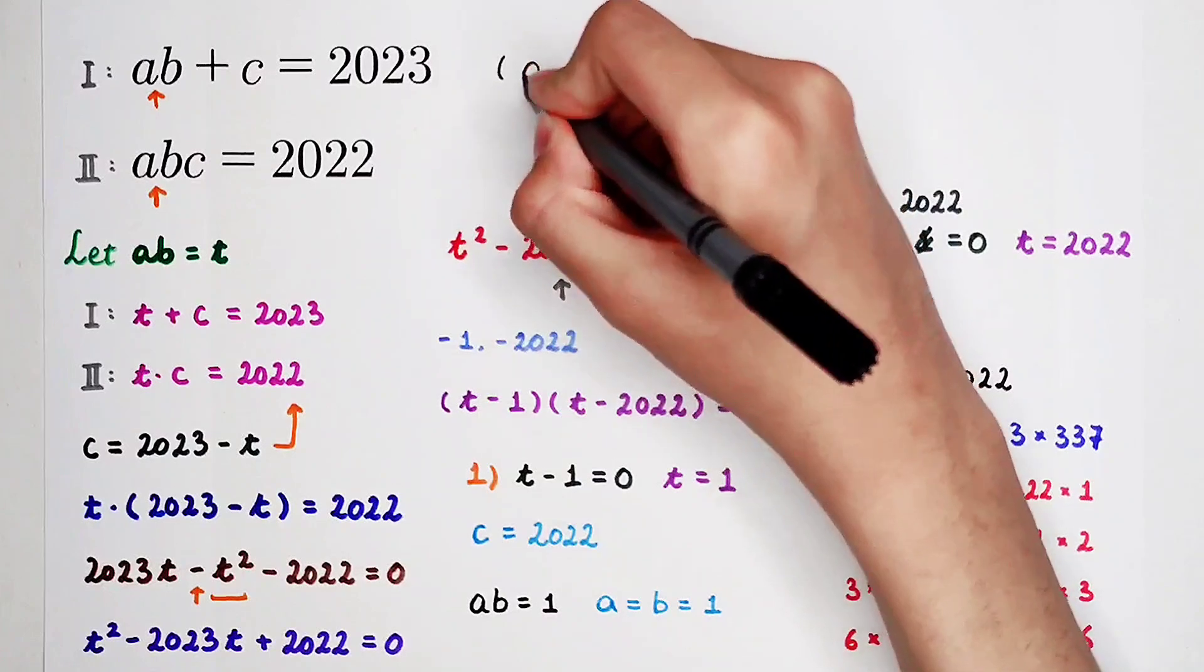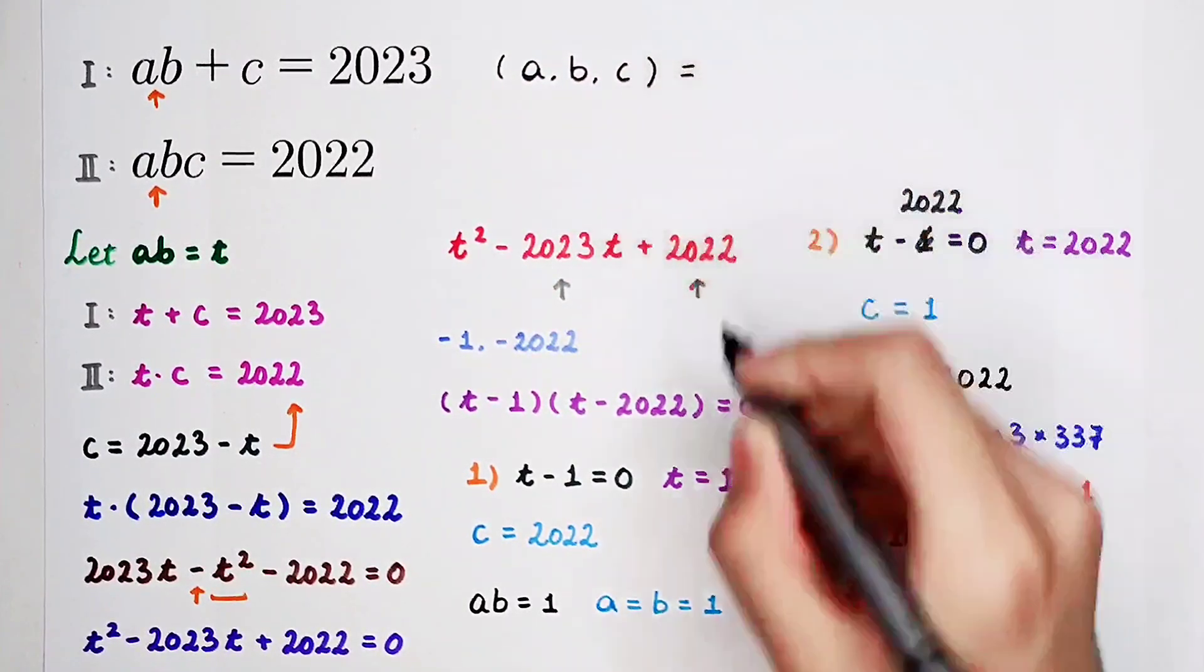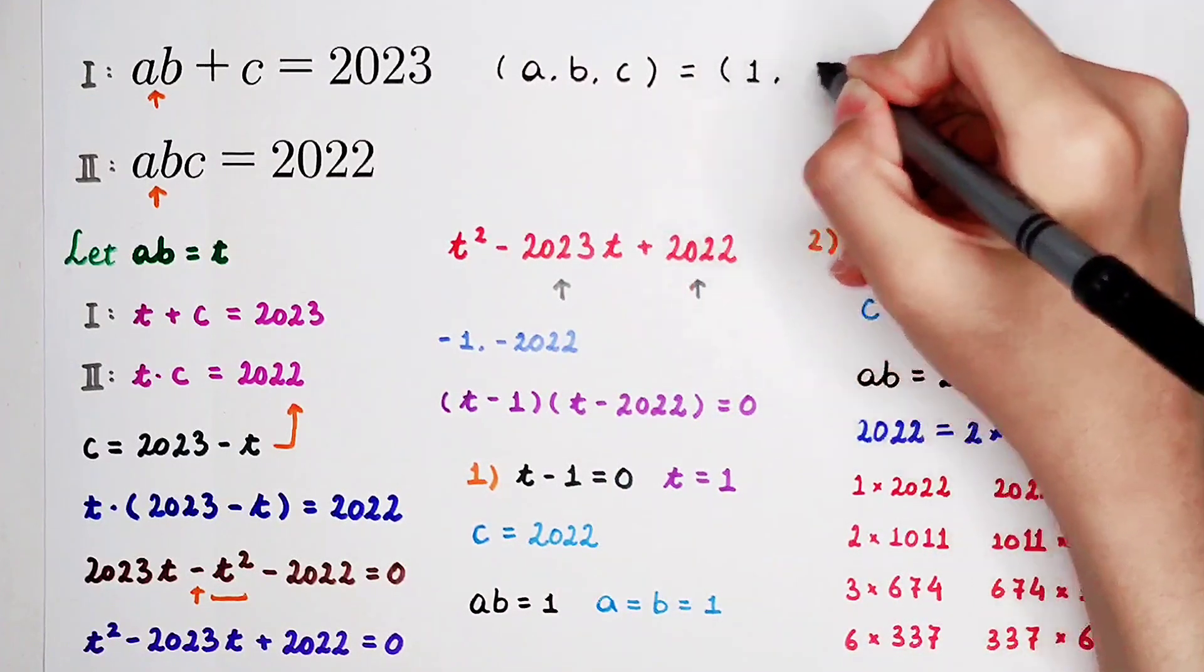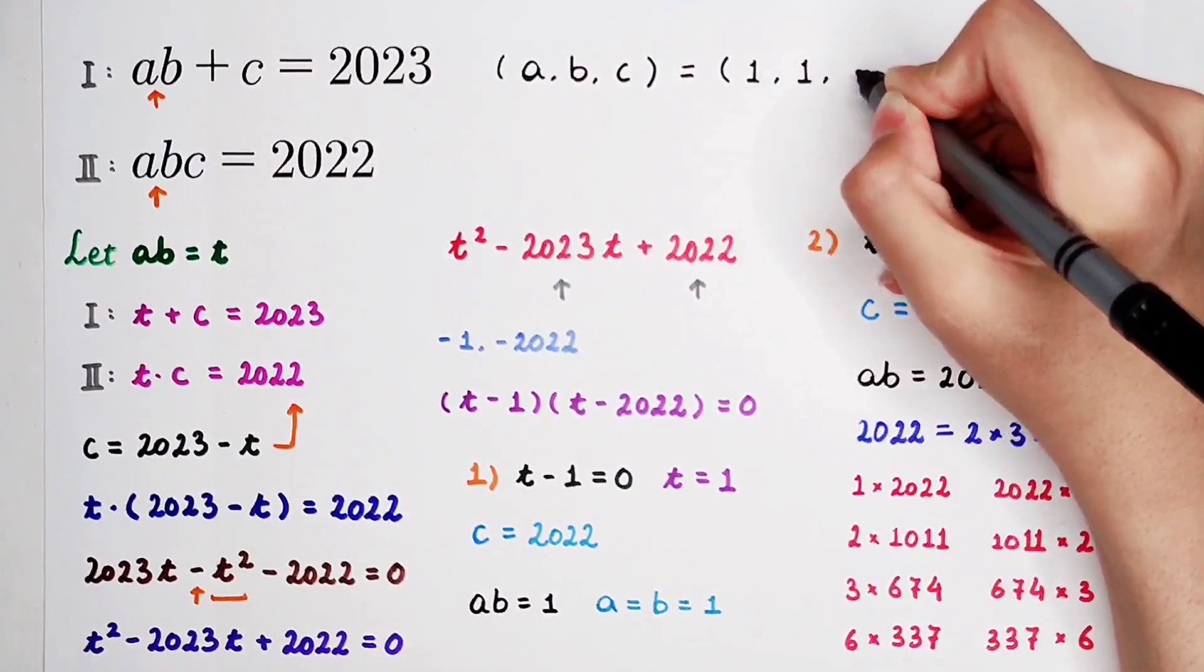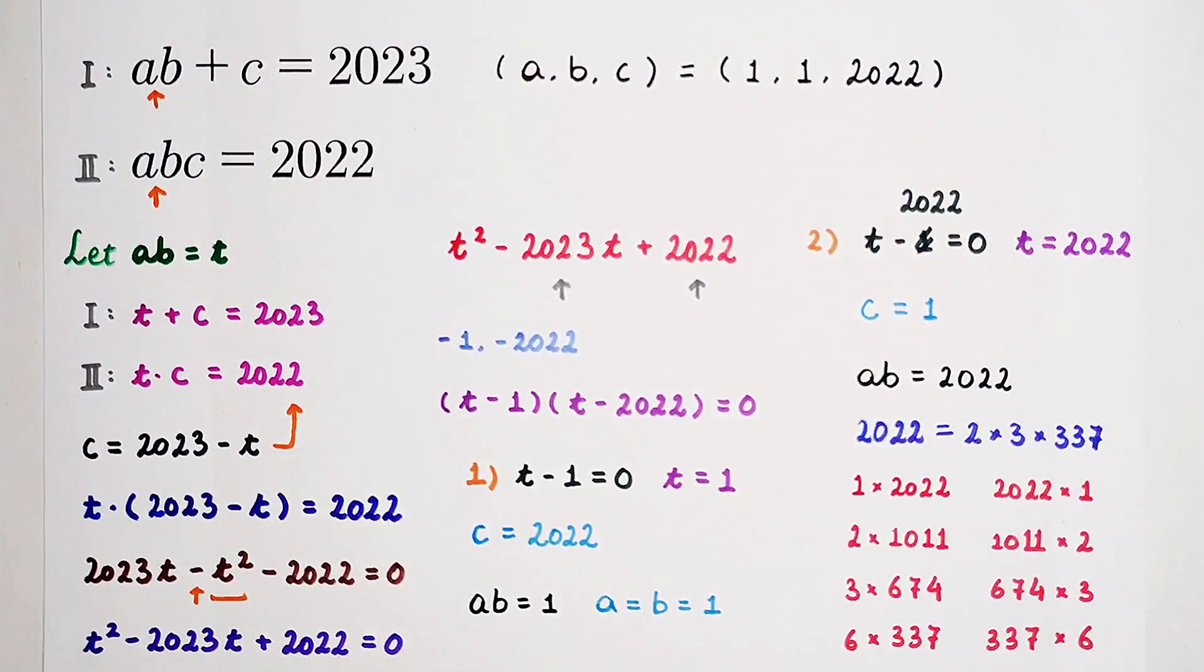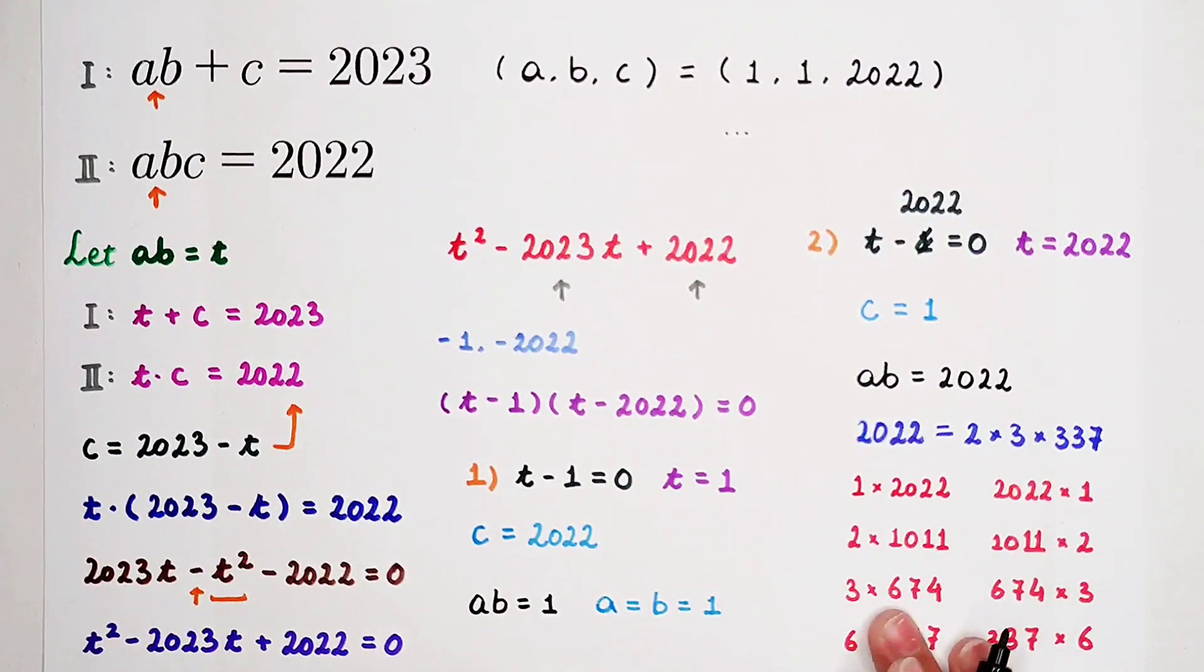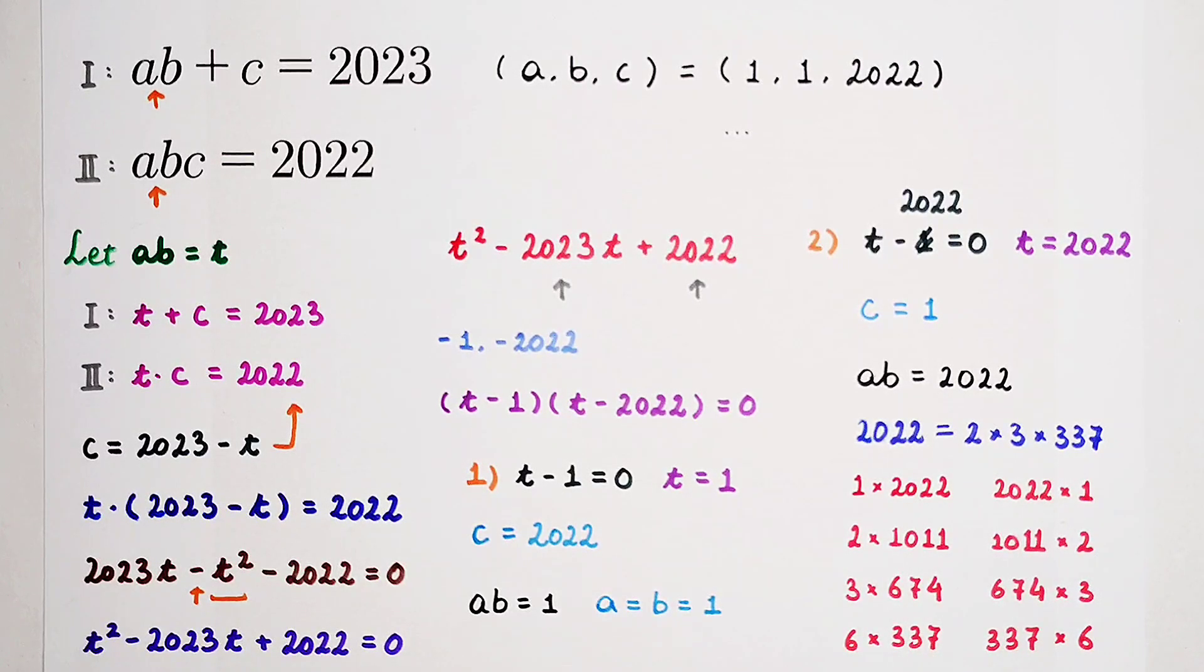So now, the solution pairs of a, b, c: the first one is 1, 1, 2022. And the last eight pairs you should write them yourself, just as a practice or an exercise. Do you get the method and trick? Don't forget to give me a thumbs up and subscribe to my channel for more videos. We'll see you next time. Bye-bye.